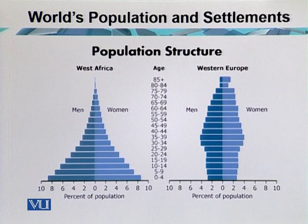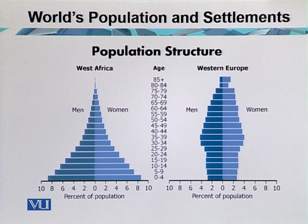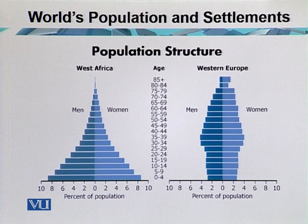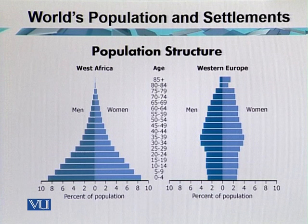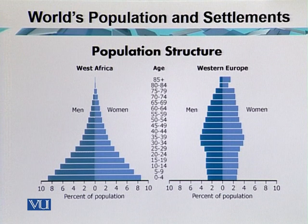Here is an example of population structure. You are seeing two different shapes. One is in pyramid shape, which is for West Africa, and one is in pillar shape, which is for West Europe. Both have different structures because of different economies. The male-female ratio in Western European countries is different compared to West African nations. Similarly, the number of age groups is different. West Africa has a broad-based population — the base has more population compared to the center or upper portion — and the top of the pyramid has less population.